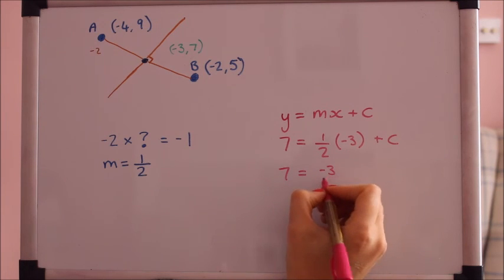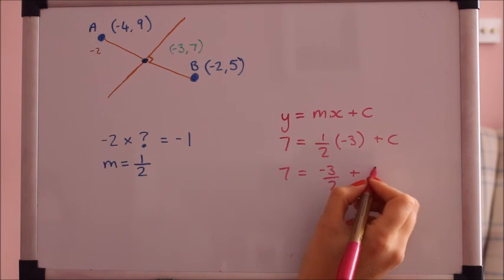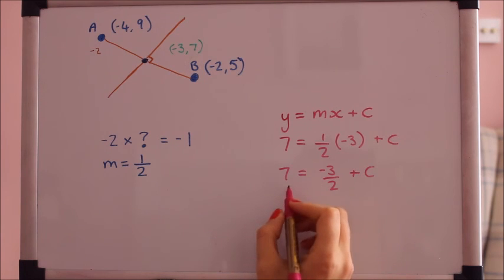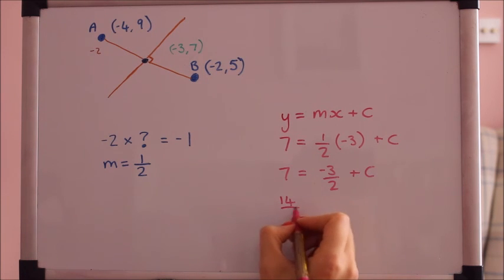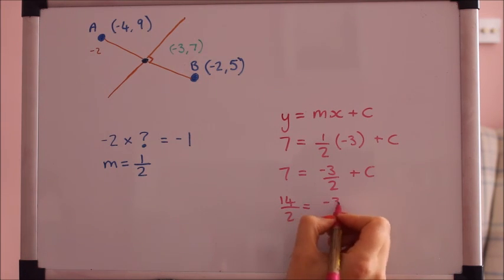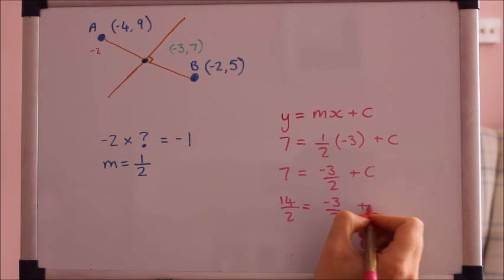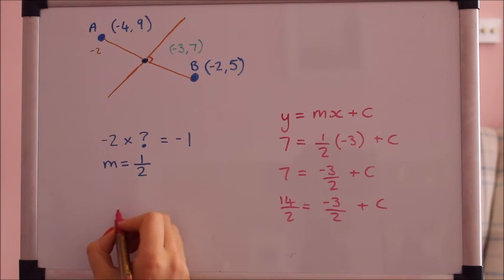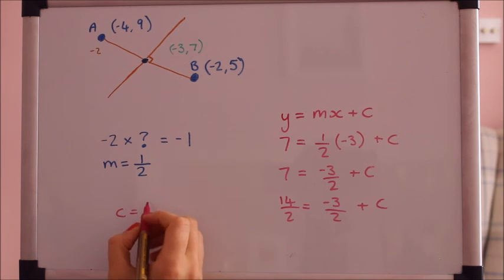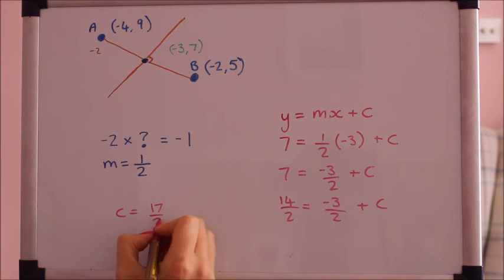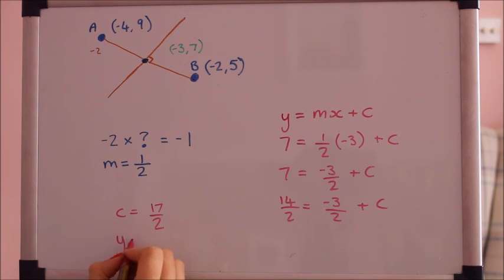Half times minus 3 is minus 3 over 2, so c is going to be 17 over 2. So now I've got y equals a half x plus 17 over 2.